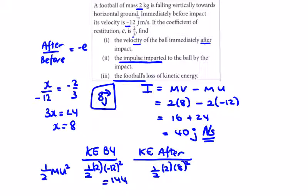8 squared equals 64, so the loss is 144 minus 64. The loss in kinetic energy is 80 joules. That's the last part of that example. Let's look at the next example.